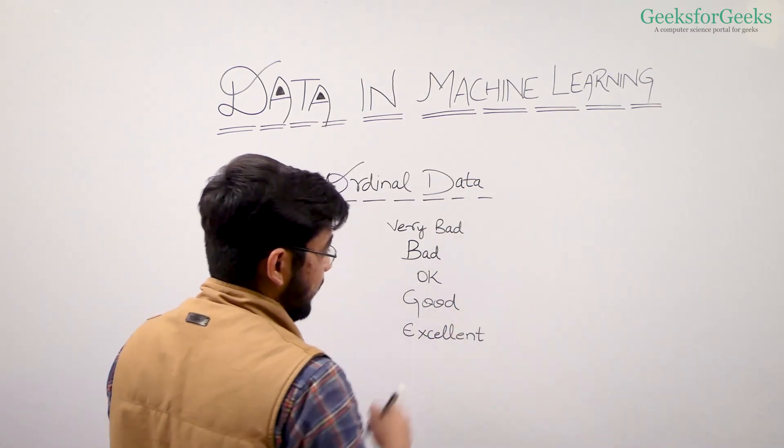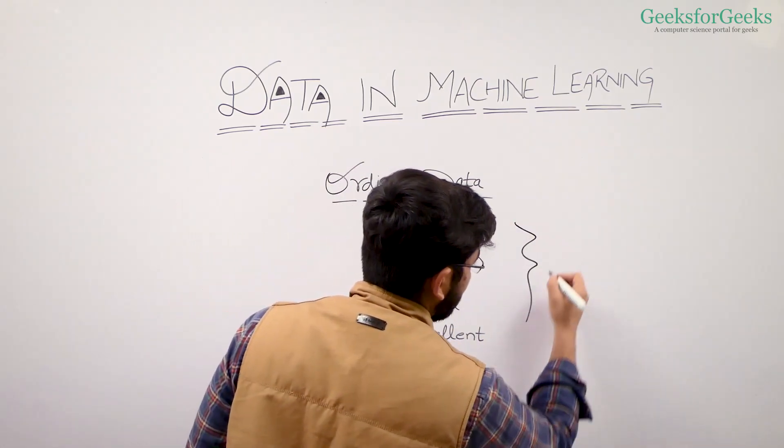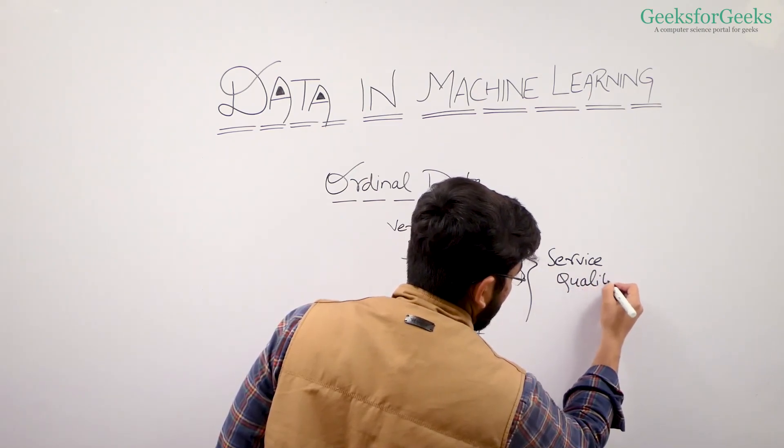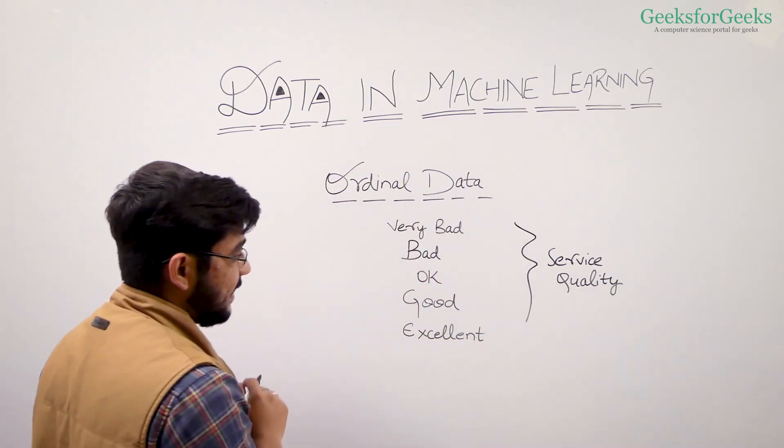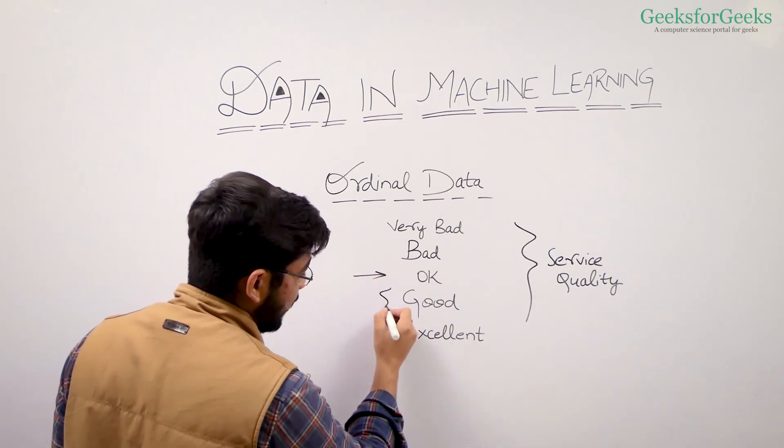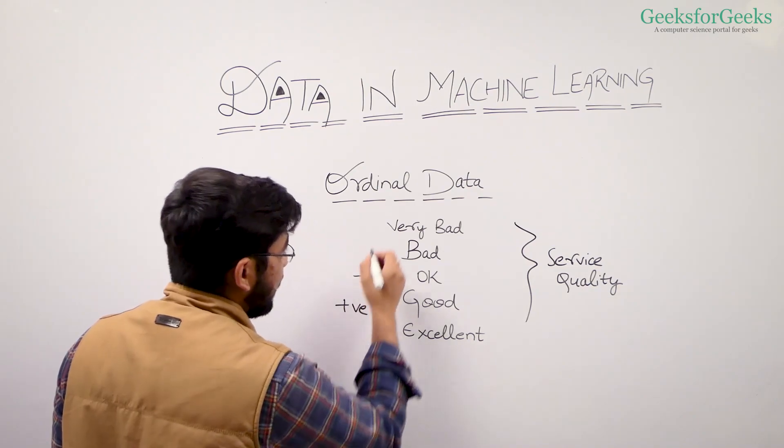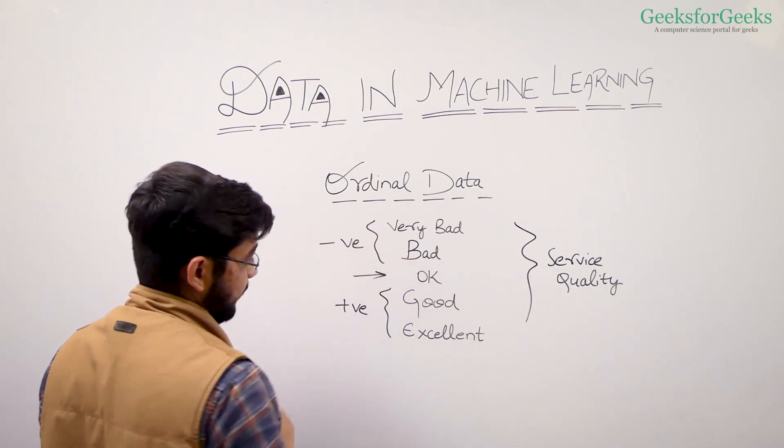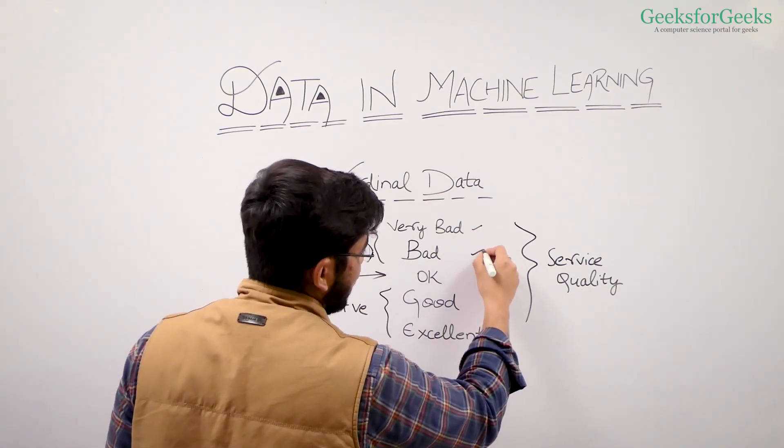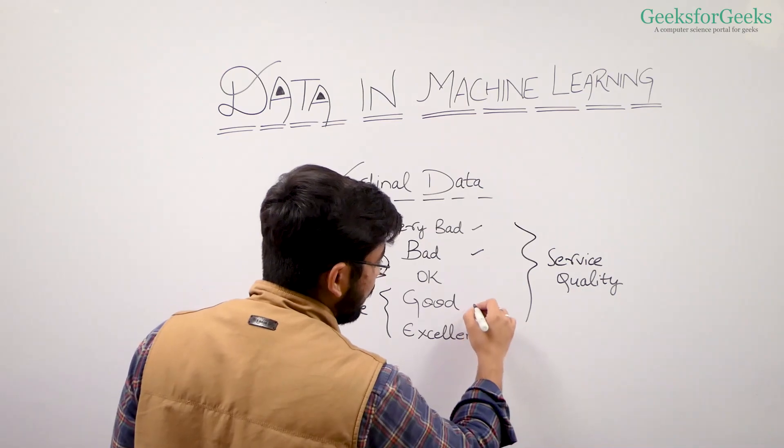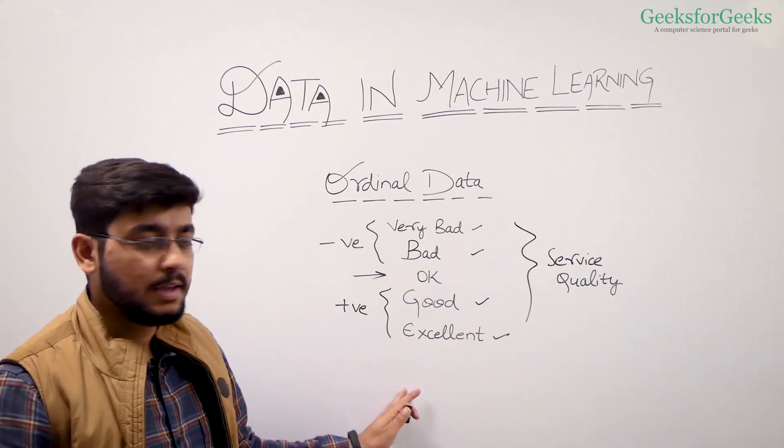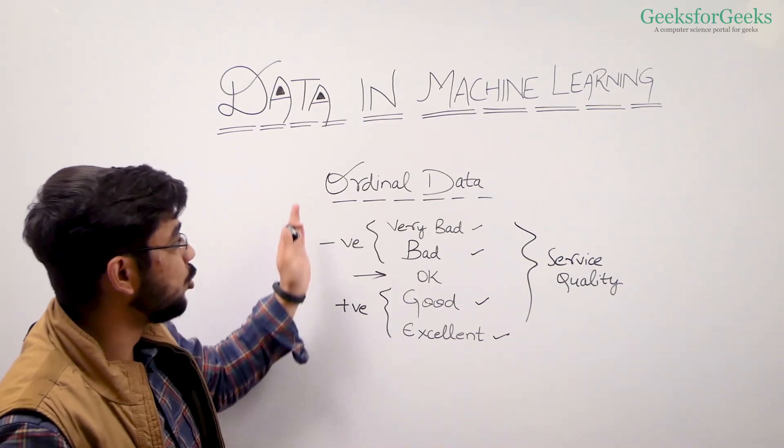These are data labels. Let's say that's the service quality data. You can easily tell that okay is a neutral behavior and these two labels are going towards positivity, this label is going towards negativity. So very bad is more negative than bad, excellent is more positive than good. You can clearly order these labels. So this kind of data is known as ordinal data.